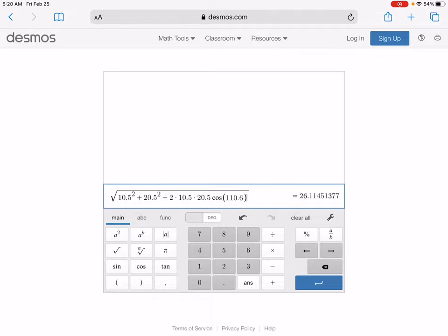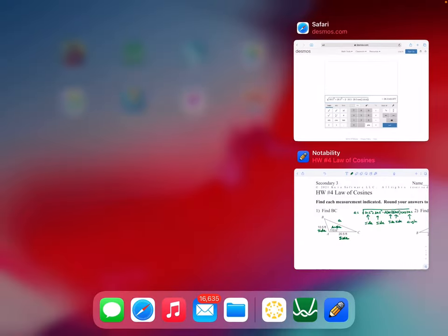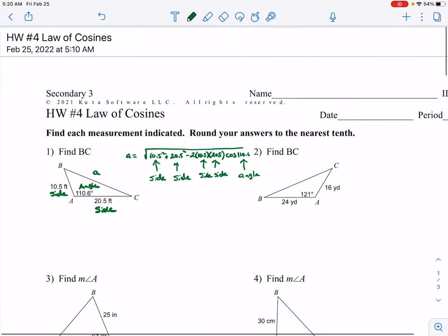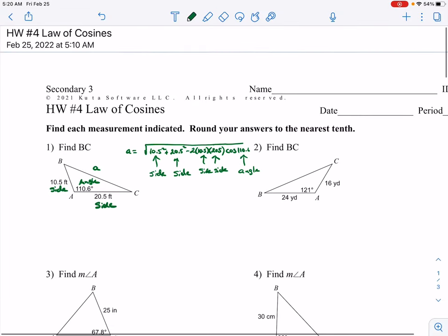So about 26.11. This one says round to the nearest tenth. So a is about 26.1.